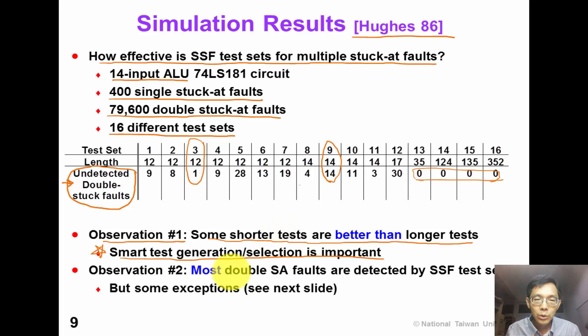Observation number 2. Most of the double stuck-at faults are detected by single stuck-at fault test set. But there are very few exceptions.